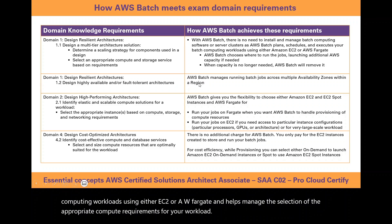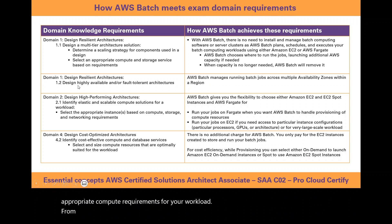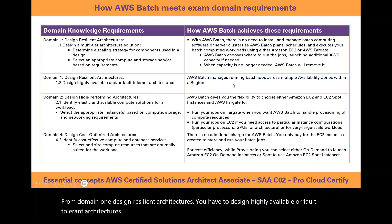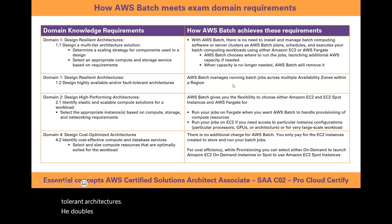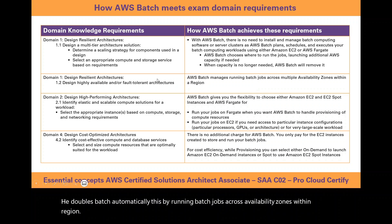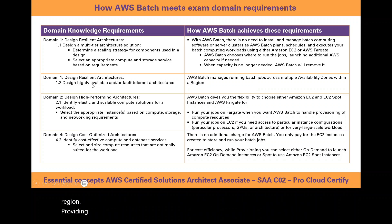From domain 1, design resilient architectures, you also have to design highly available or fault tolerant architectures. AWS Batch automatically manages this by running batch jobs across availability zones within a region, providing you high availability for your architecture.